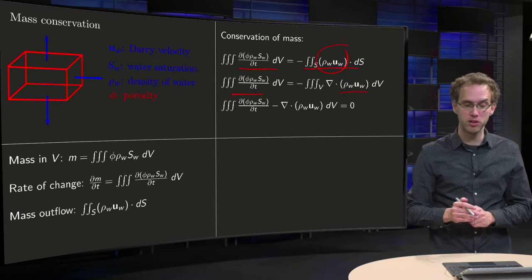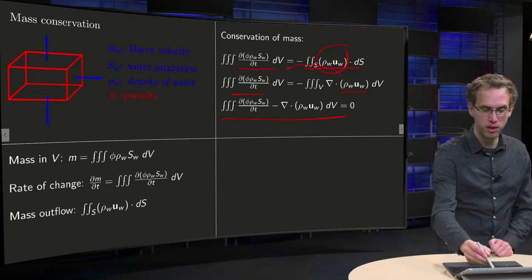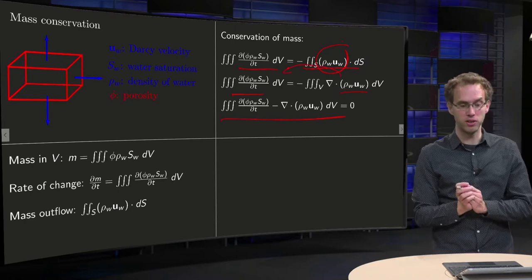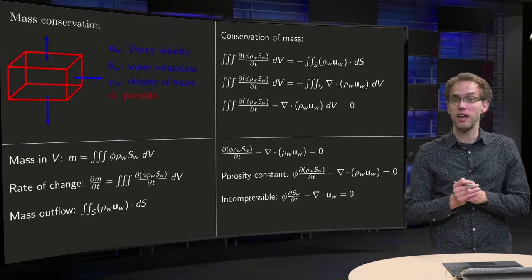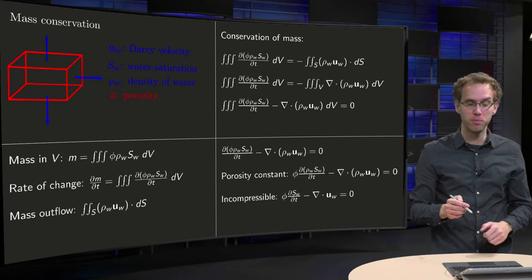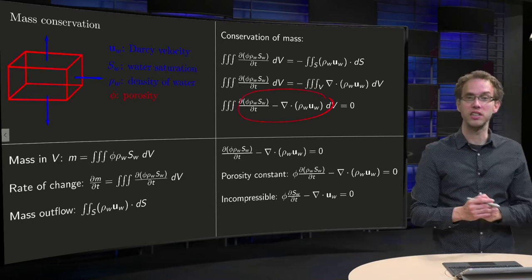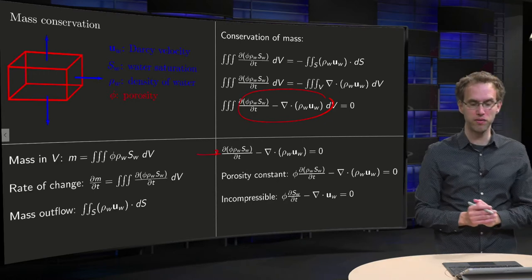Now then we have two volume integrals, so we can turn them into one volume integral by taking this one to the left hand side. And this volume integral has to be equal to zero. This integral has to be zero for any volume you take, so independent of volume. And that only happens if its integrand is everywhere zero. So we get the equation over here.